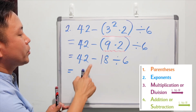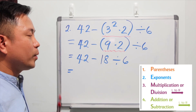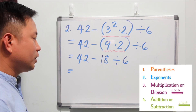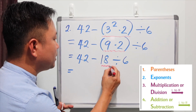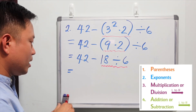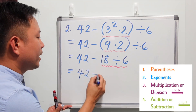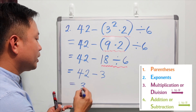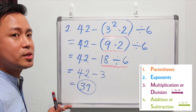Now we have operations minus and division. Which do we simplify first? Division — because multiplication and division are simplified from left to right. So 18 divided by 6 gives 3, and 42 minus 3 gives us 39 as the answer for this expression.